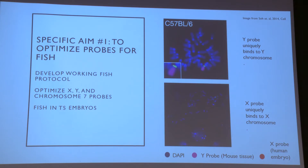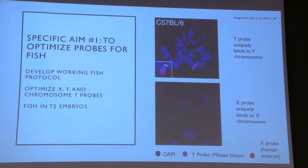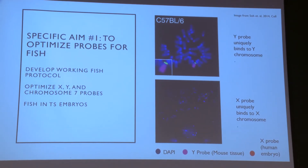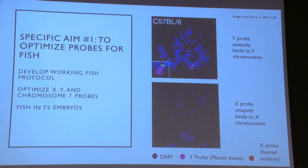I want to point out what's pictured on these slides. Up on the top, this shows the probes we were using — that's for the Y probe. It's showing that the Y probe specifically binds only to the Y chromosome. The blue marks are all chromosomes, and the Y probe is only binding in the colored region. Same thing for the X on the bottom.